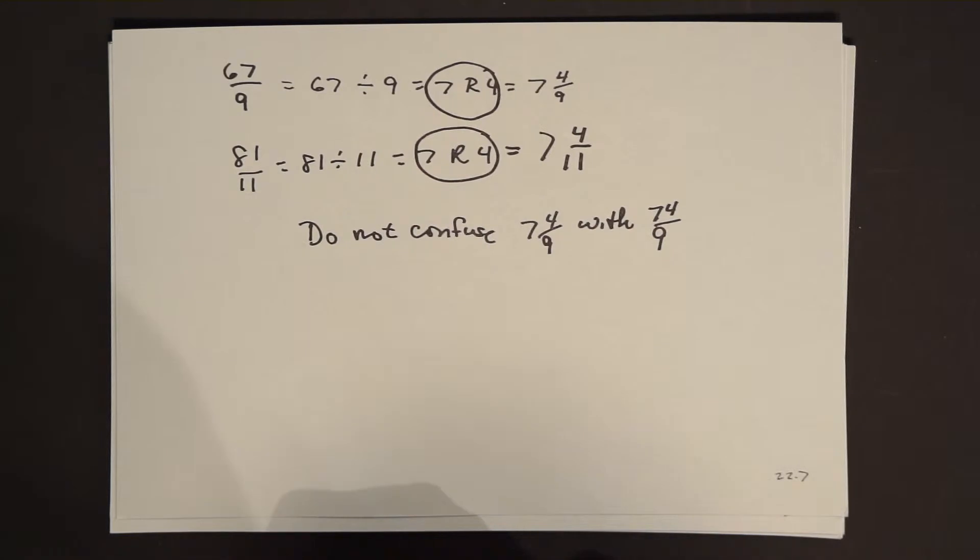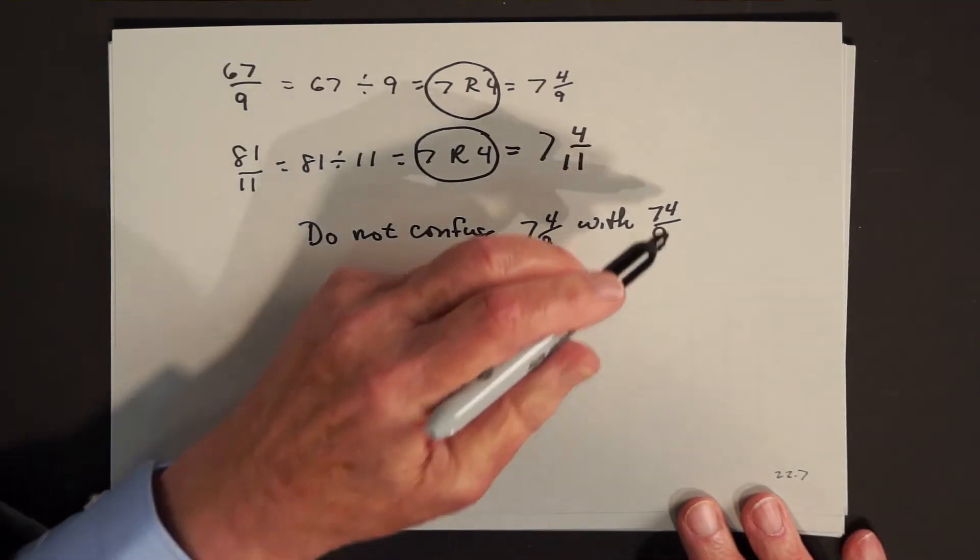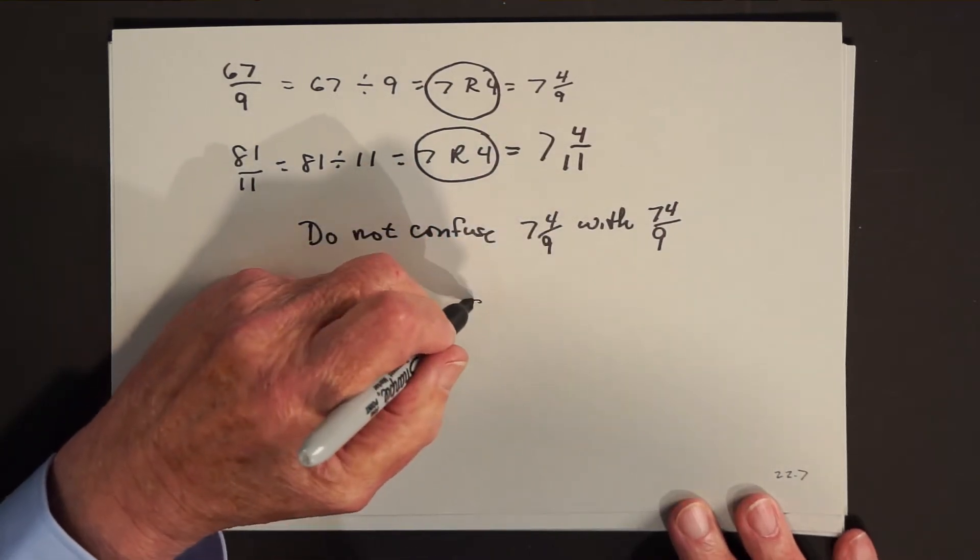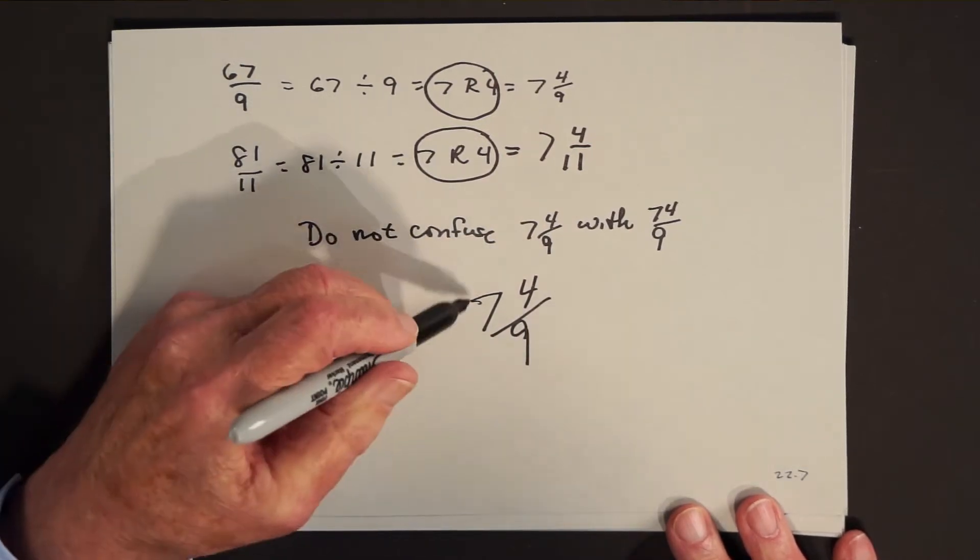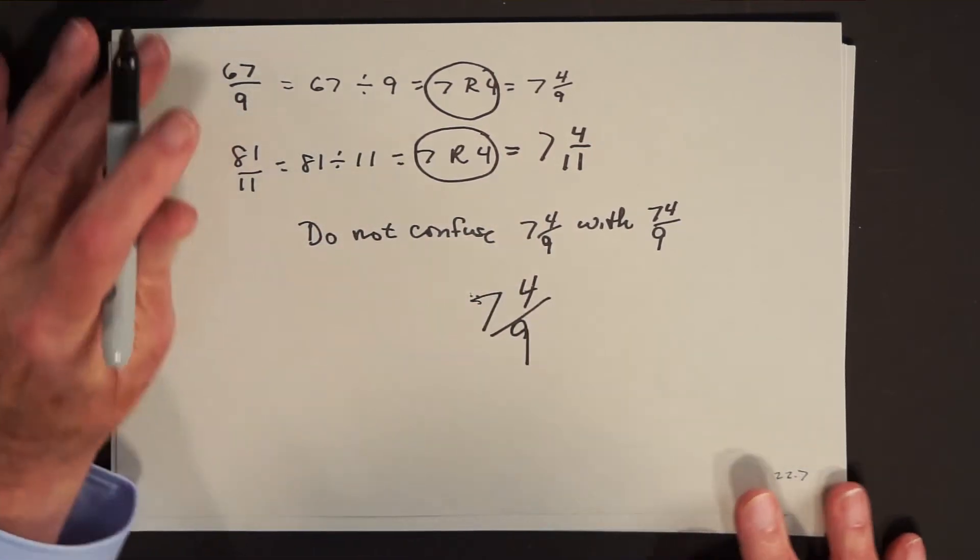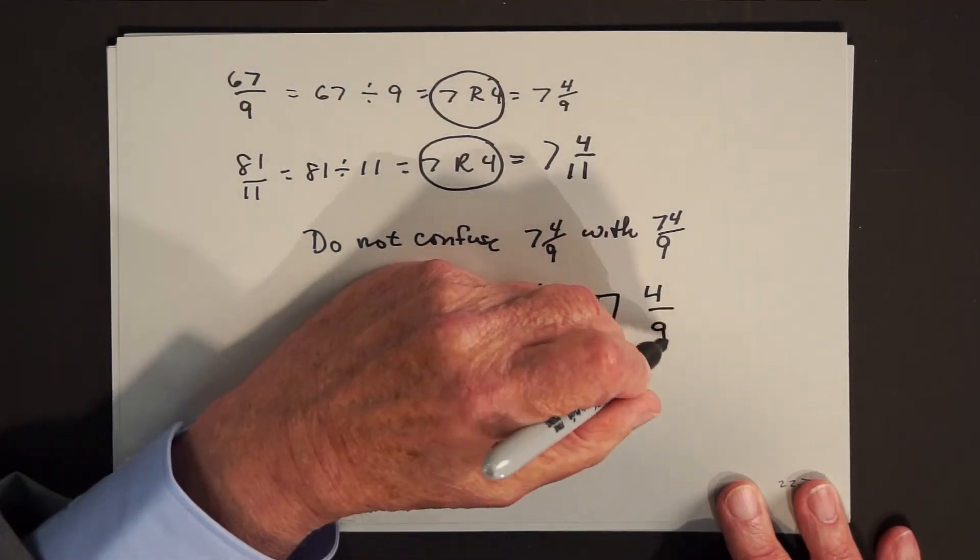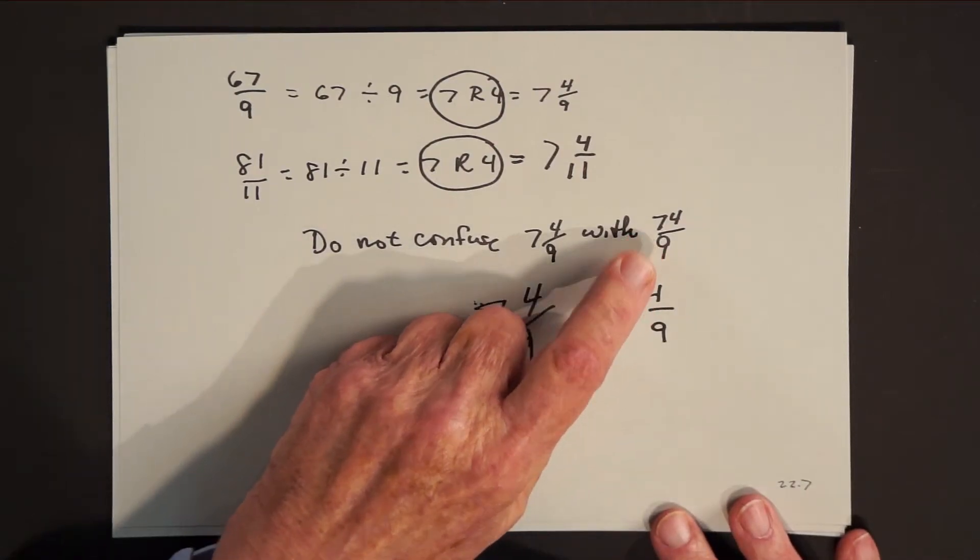So if we wrote this as a mixed number, the first one is 7 and 4 ninths. The second one is 7 and 4 elevenths. And by the way, I often prefer to write a mixed number as an improper fraction. And the reason is if you take 7 and 4 ninths and write it sloppily, it looks like 74 ninths. So be very careful when you do write a mixed number that there's no danger of making this kind of mistake.